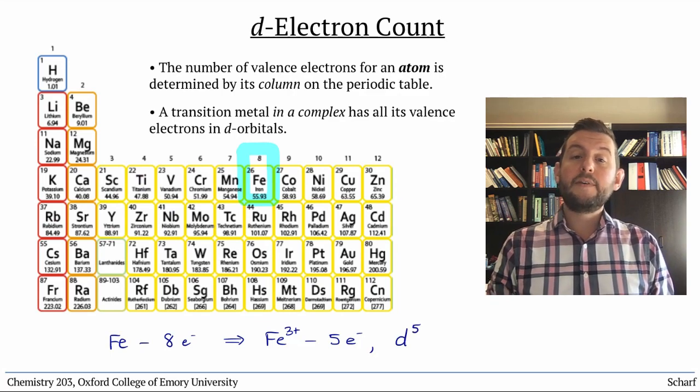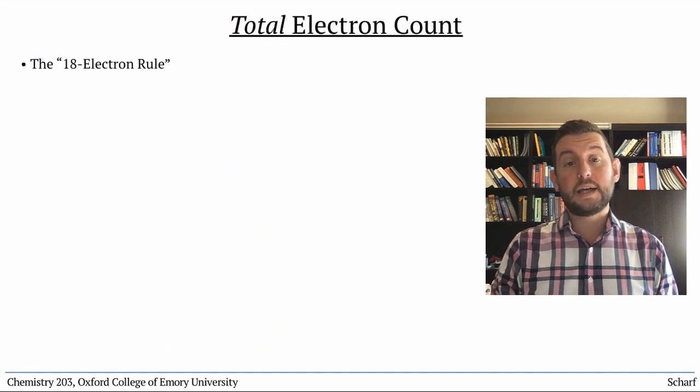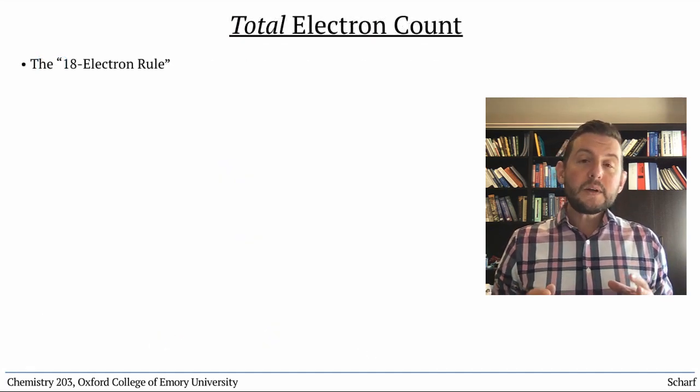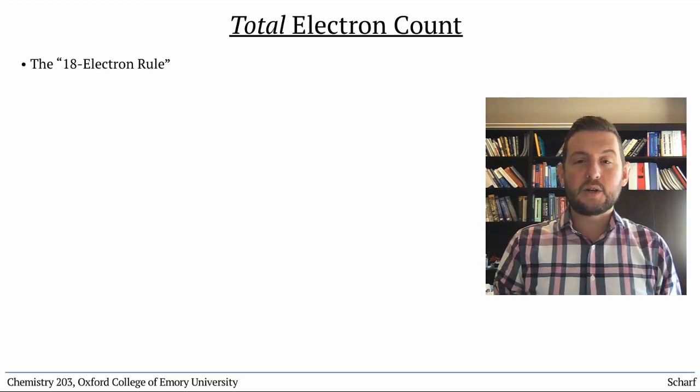Another important numerical value that characterizes transition metal complexes is the total electron count. Transition metals follow a rule called the 18 electron rule.